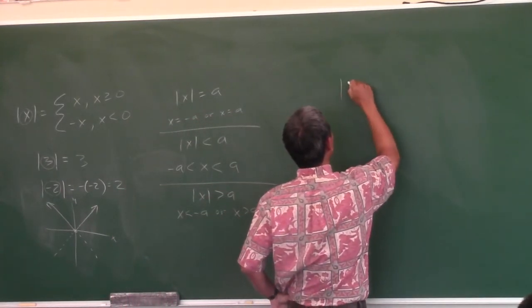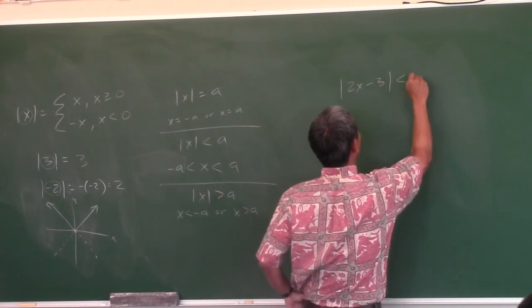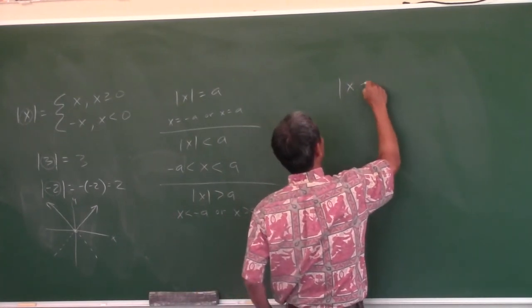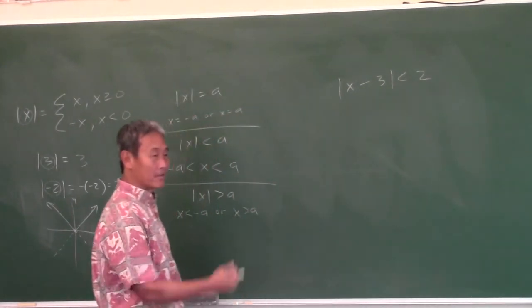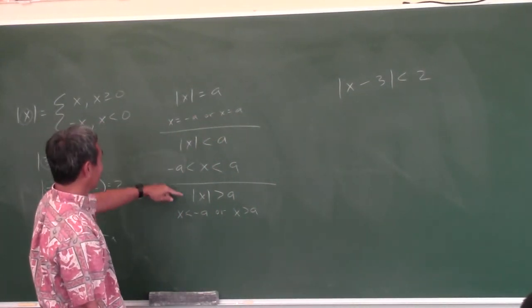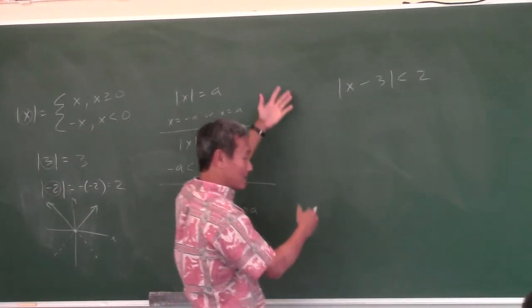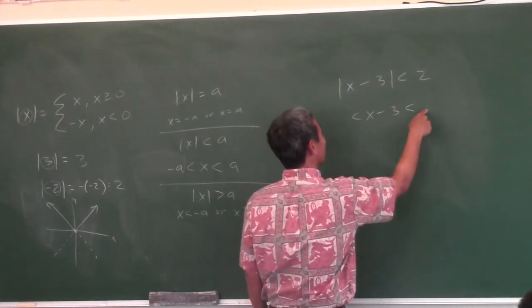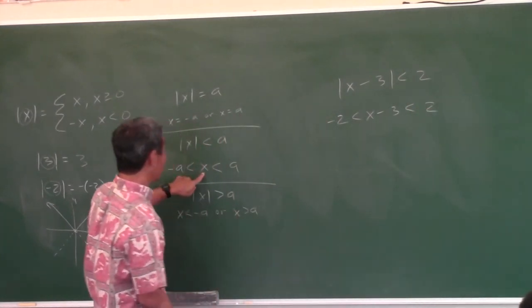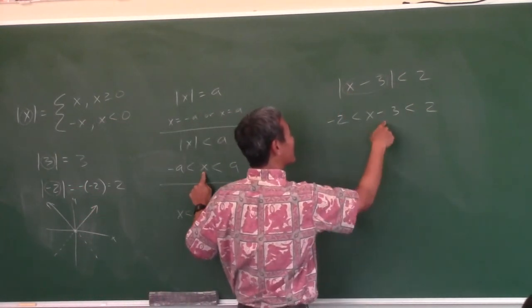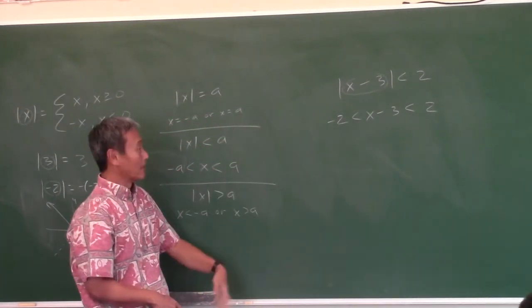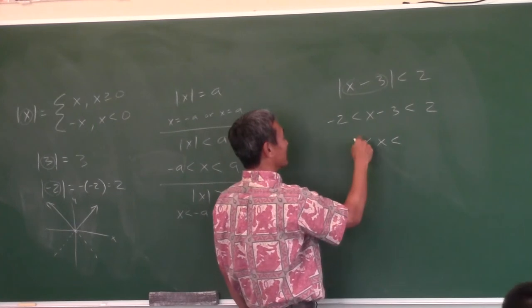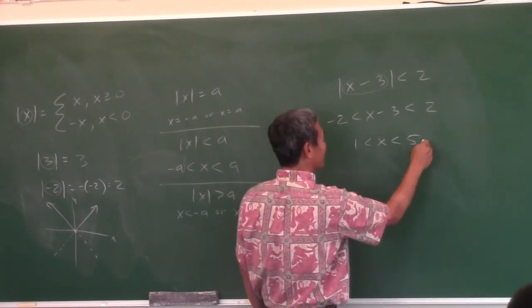The SAT kind: absolute value of x minus 3 is less than 2. Does that look like one of these forms? Yeah — absolute value of x is less than a. So you put x minus 3 in the middle, then negative 2 and 2 on either side. That's just like the template: you put whatever is inside in the middle, and put negative a and a on the sides. Then solve for x: add 3 to everything. You get 1 less than x less than 5.